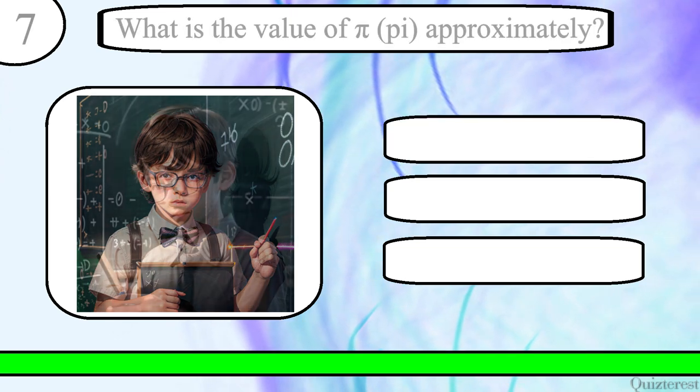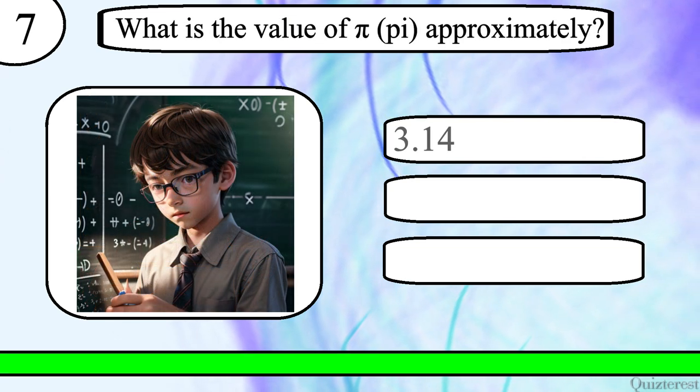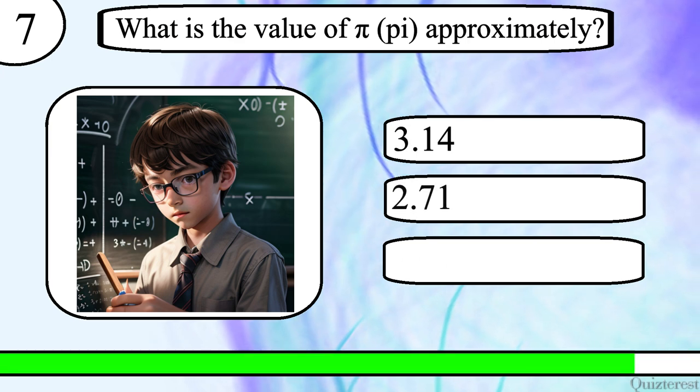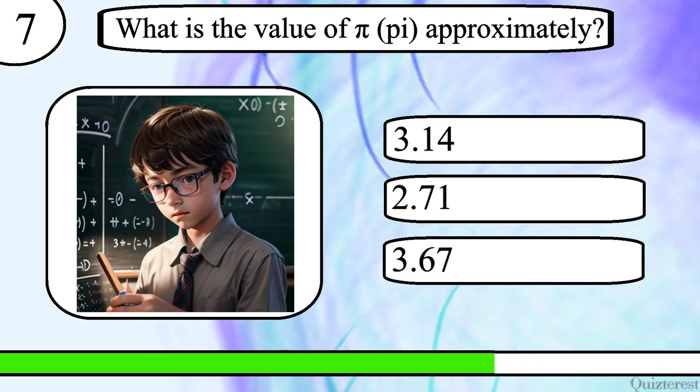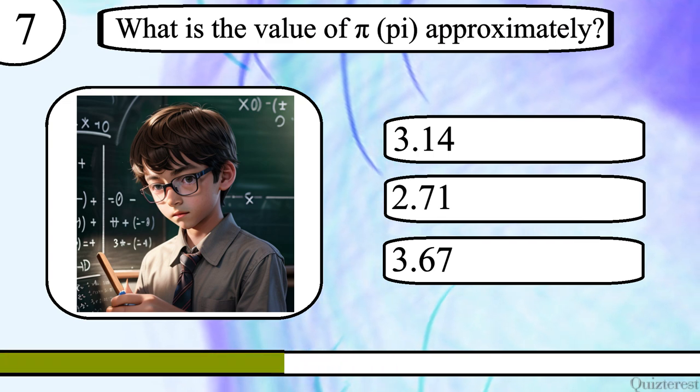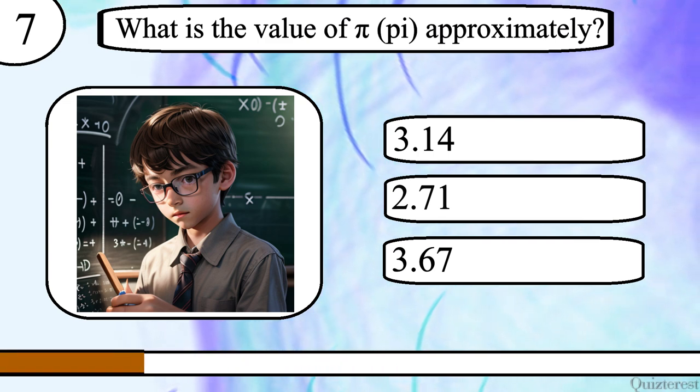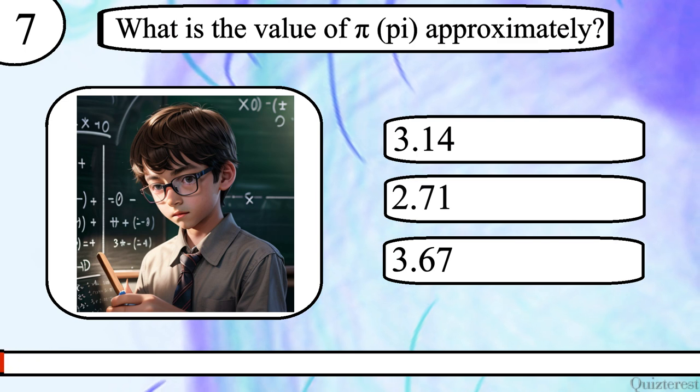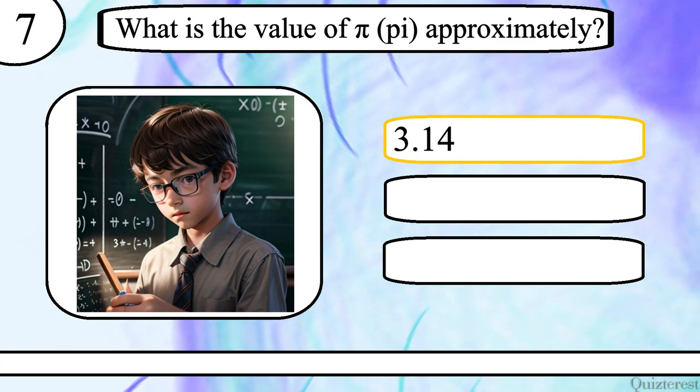Question 7. What is the value of pi approximately? 3.14, 2.71 or 3.67? The correct answer is 3.14.